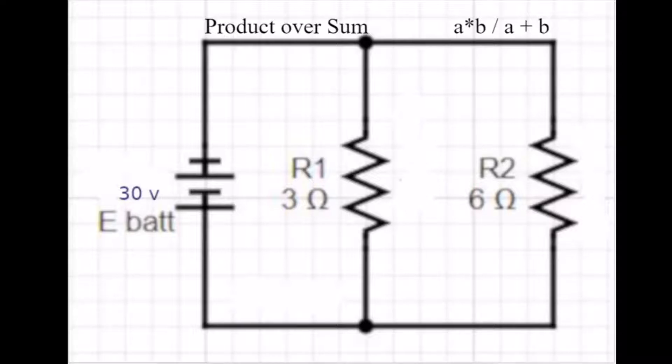First thing we remember is that the voltage is the same everywhere throughout the circuit, in a parallel circuit. So if we want to solve for the current at R1, we would do that simply by using the formula.